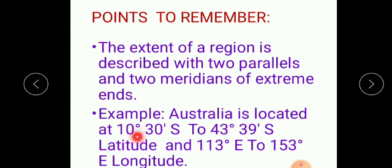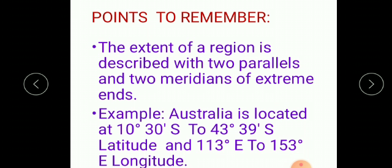Australia as a continent is located at 10° 30' South to 43° 39' South — two parallels — and 113° East to 153° East longitude — two meridians. So to express the extent of a large region, you take help of two parallels and two meridians of the extreme ends.